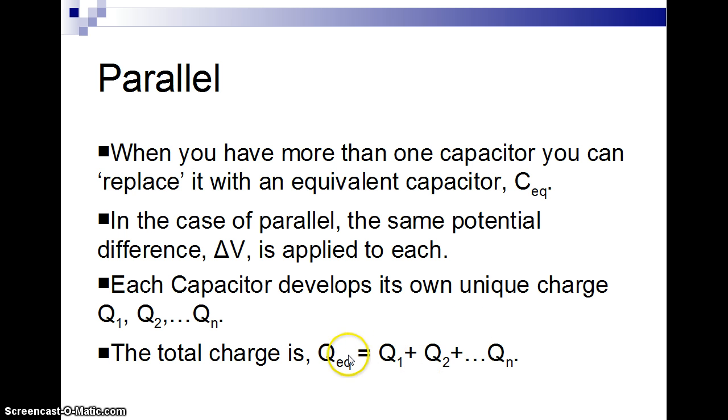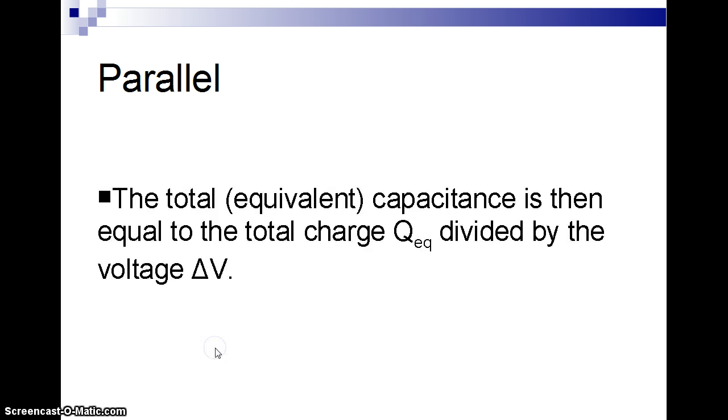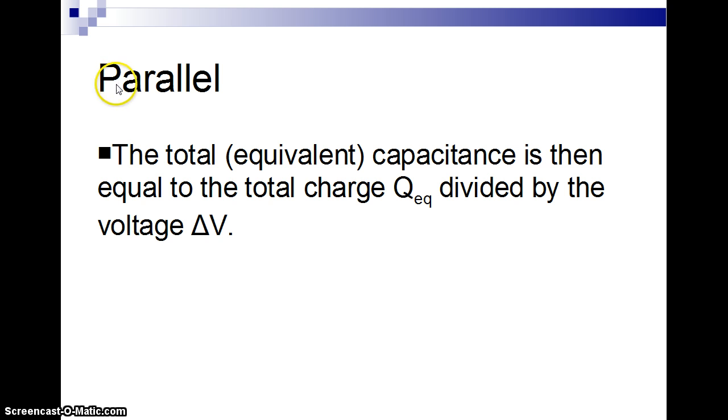We have N capacitors. To find the total amount of electric charge that we've built up on these capacitors, we're going to call that the equivalent charge. That's just going to be all the charges added up, because each one's going to have its own charge. The equivalent capacitance is just the equivalent charge divided by the voltage. Remember, each one's going to have the same voltage, so we don't have to worry about an equivalent voltage.